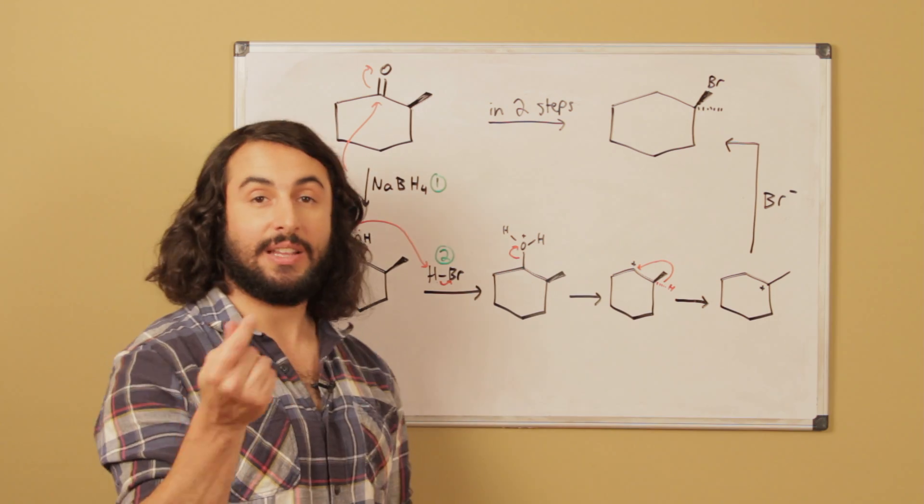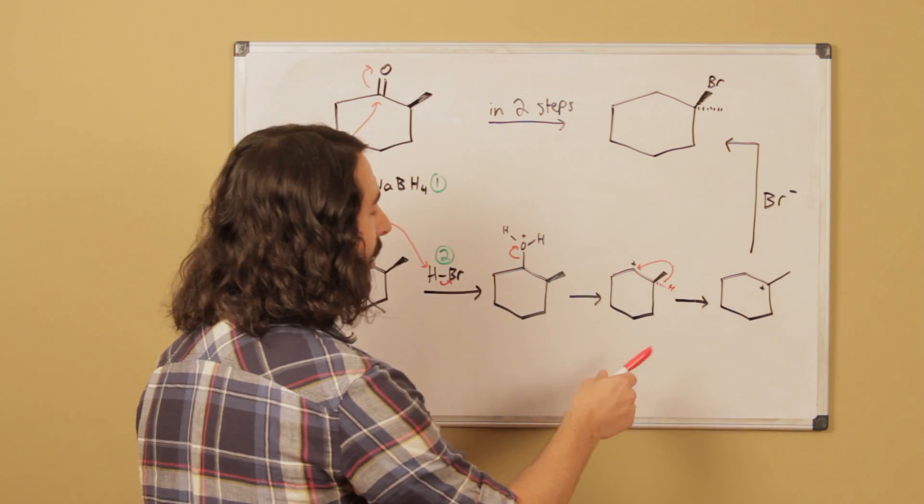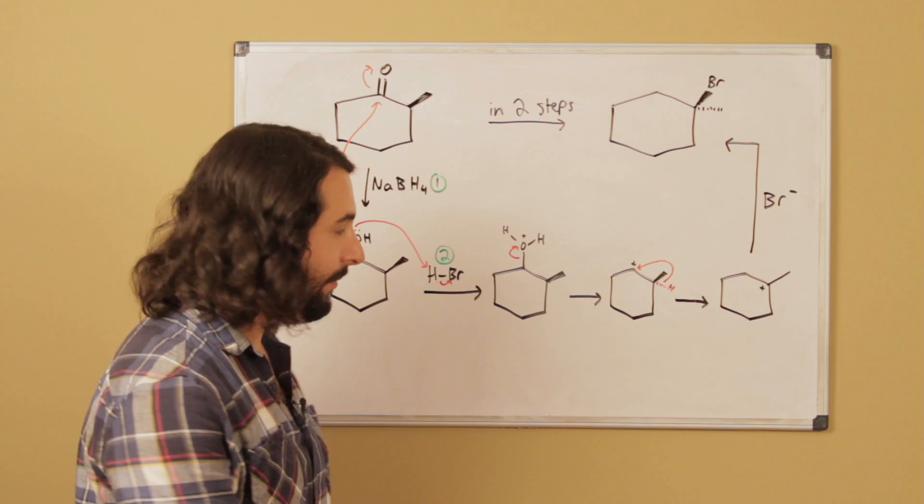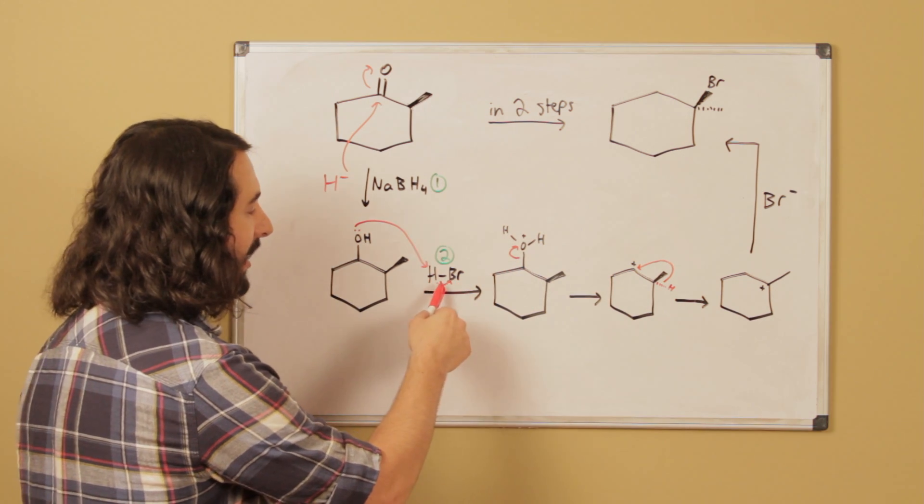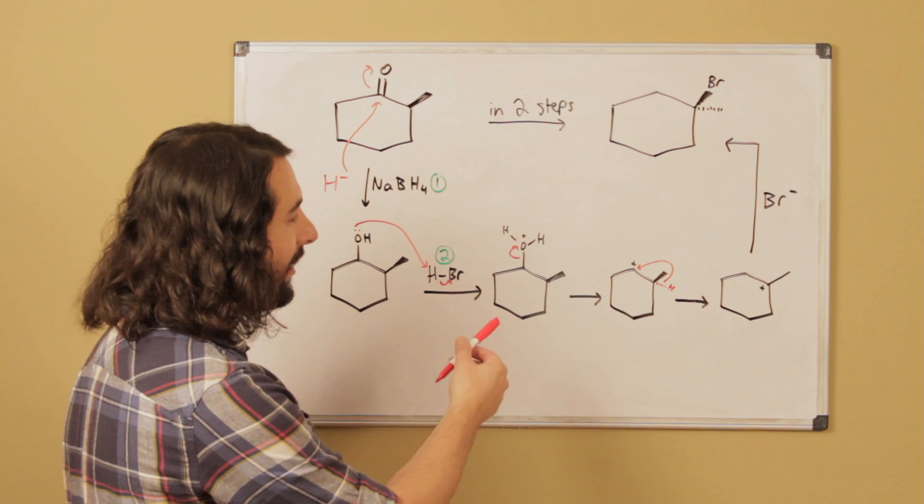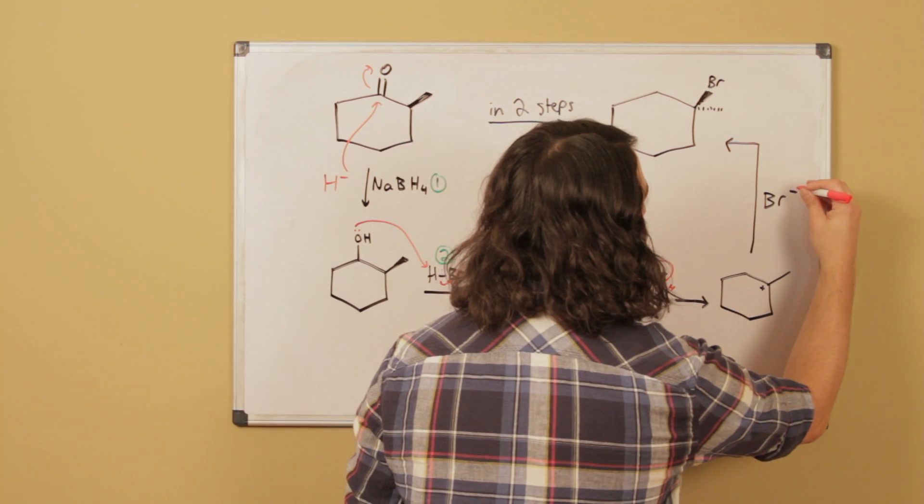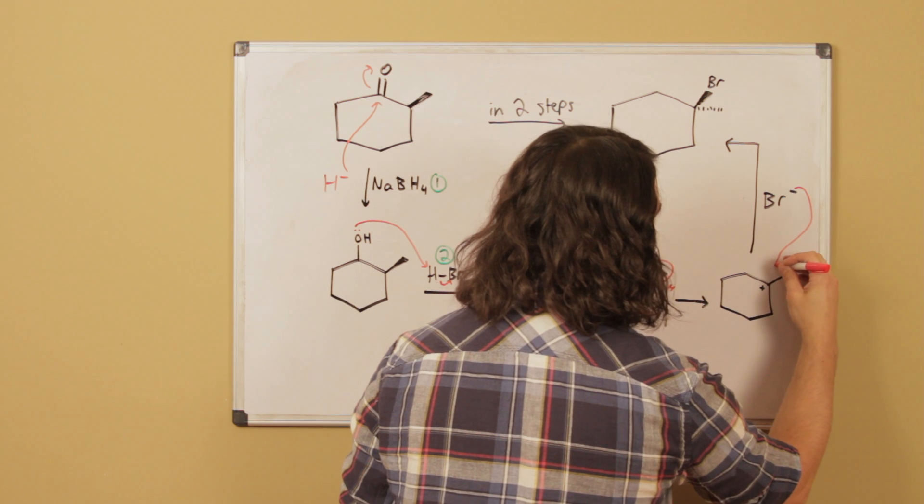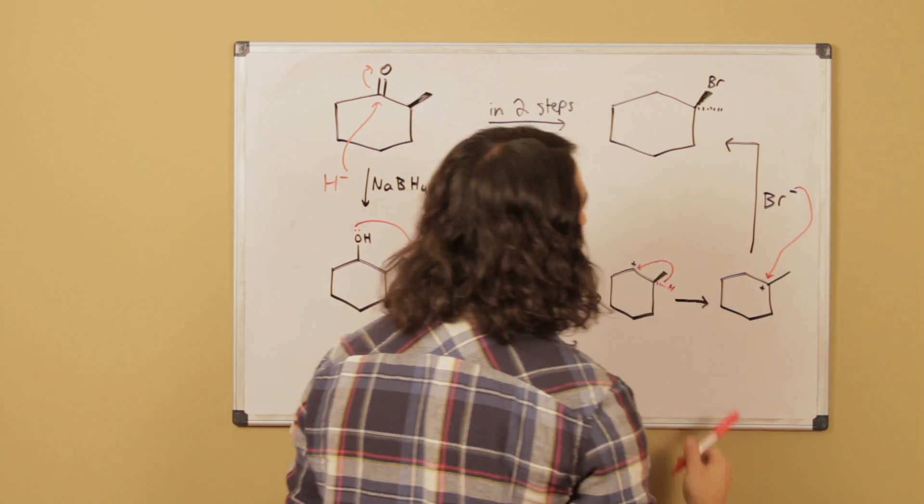And now, since we used hydrobromic acid, when this deprotonated it's going to leave a lot of bromide swimming around in solution. So that's going to kill two birds with one stone, because if there's a lot of bromide and it finds this carbocation, it is absolutely going to react and generate the intended product.